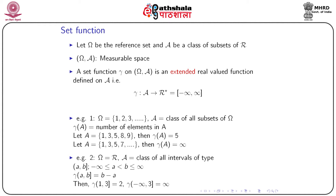A measurable space consists of two quantities: the reference set and the class we are talking about. A set function is defined on script A as an extended real-valued function. By extended real-valued function we mean that gamma can take the value minus infinity as well as plus infinity. So this set function gamma is a mapping which maps class script A into the extended real line consisting of minus infinity as well as plus infinity, denoted as a closed set where both endpoints are included.